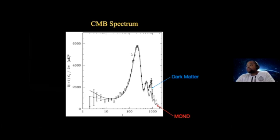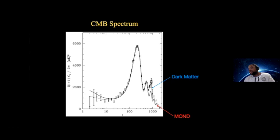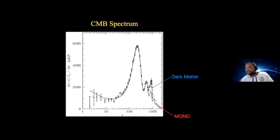The CMB spectrum is another major piece of evidence — some say the most important — because it lets us see the whole universe as a picture. The power spectrum tells us a lot: the first peak's position tells us the shape of the universe, and the third peak tells us dark matter exists. We have two fits to the data: Lambda-CDM (a dark matter model) fits the third peak much better than Modified Newtonian Dynamics, confirming dark matter interacts gravitationally at all scales.